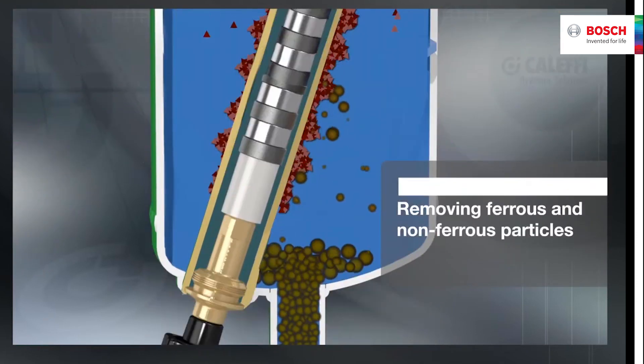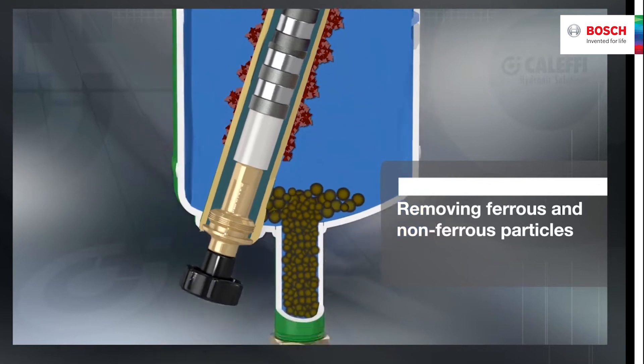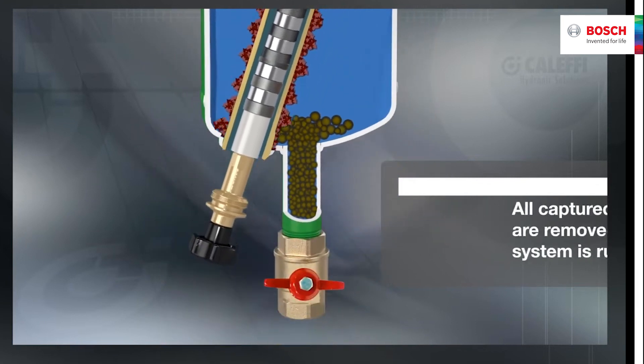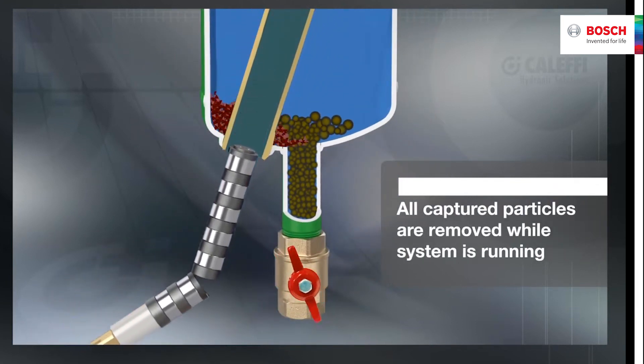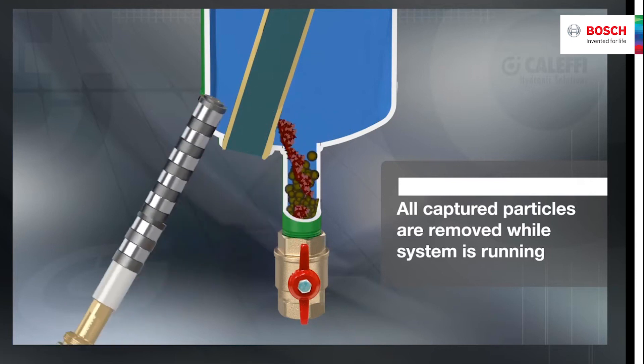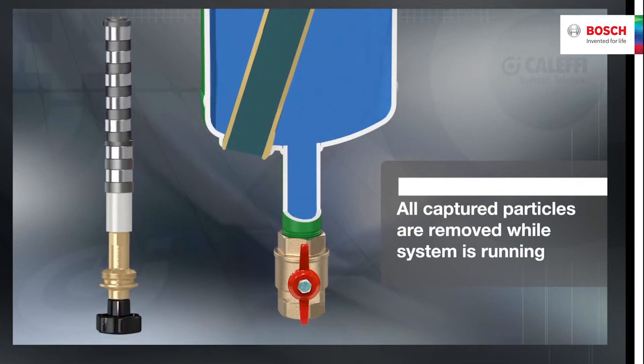Ferrous impurities including magnetite form in hydronic systems when iron or steel corrodes. Highly abrasive, these extremely fine particles are difficult to remove and can deposit onto heat exchange surfaces and accumulate in pump cavities, causing reduced efficiency and premature wear.